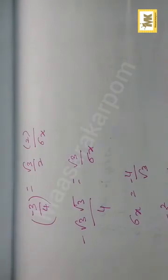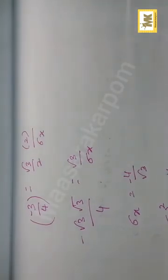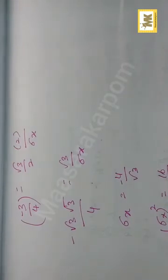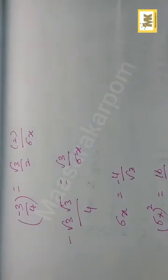Cross multiplying gives sigma x is equal to minus 4 by root 3, which is the standard deviation of x.